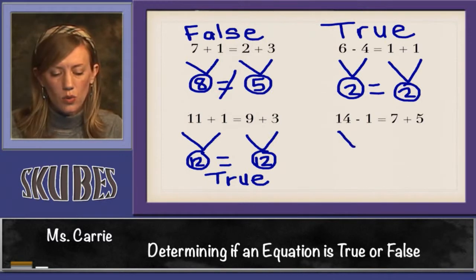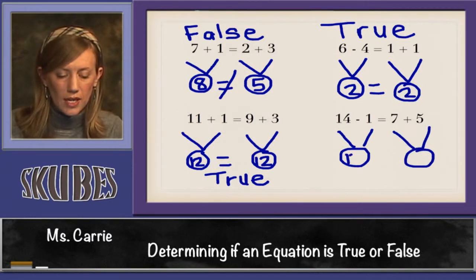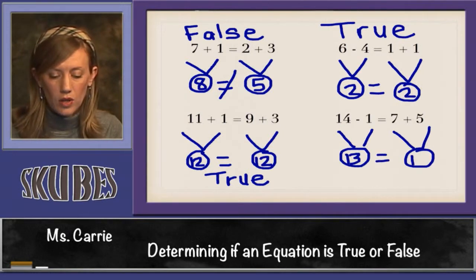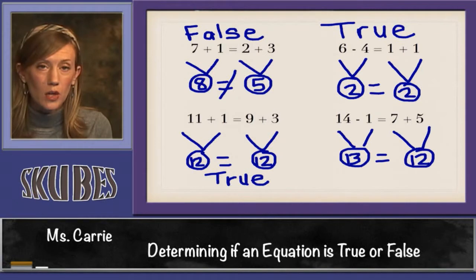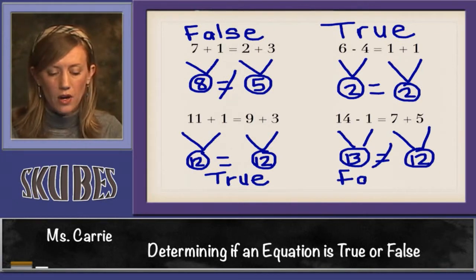Now down here we have 14 minus 1 and we have 7 plus 5. Well 14 minus 1 is 13 and 7 plus 5 is 12. Are these numbers equal to one another? No they're not. They're not the same. So this is false.